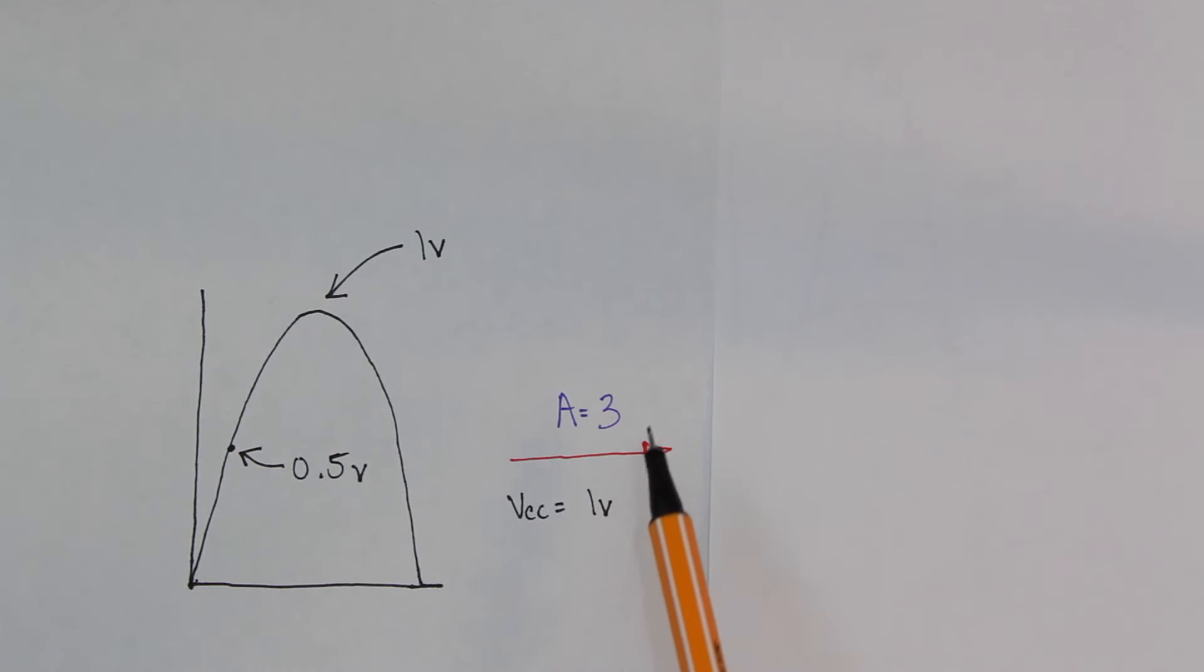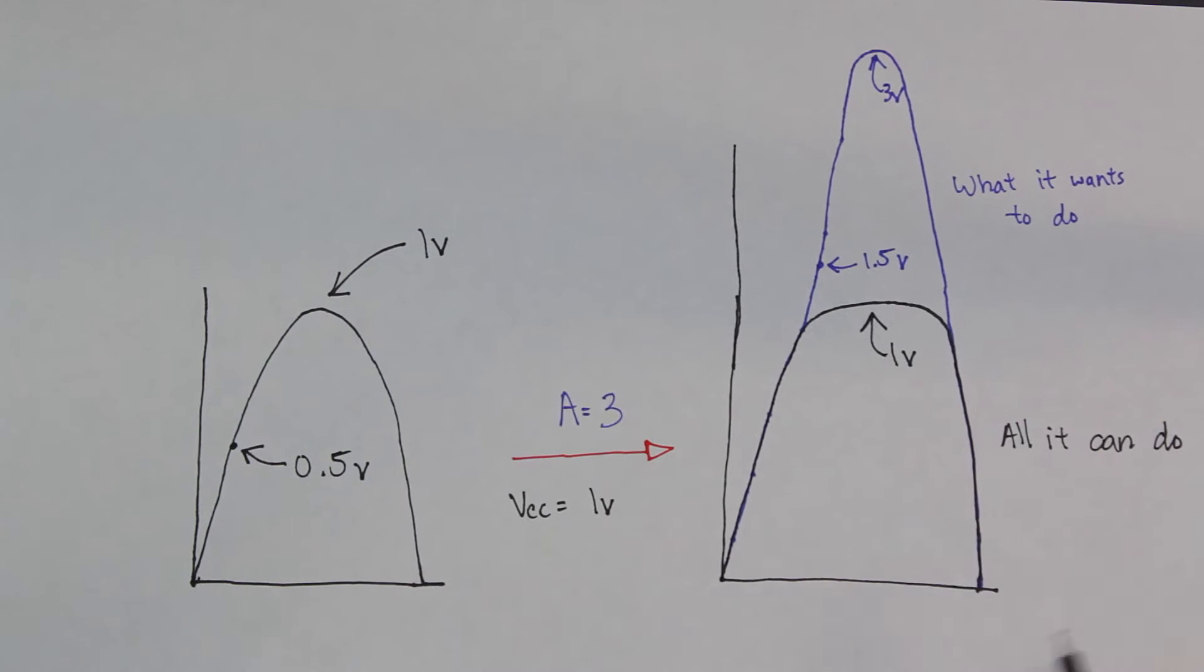So let's say you have this curve here with a maximum peak of 1 volt. And you try and amplify this curve with a gain of 3 volts, which means the peak should now be at 3 volts. But yet, your power supply is only 1 volt. Well, it won't matter. Your peak will never go above 1 volt, because you just don't create power with an amplifier.